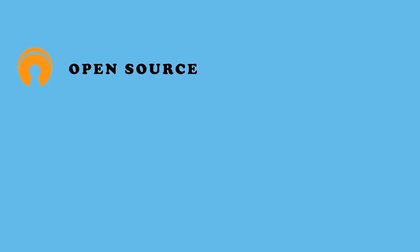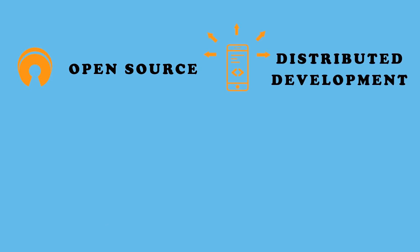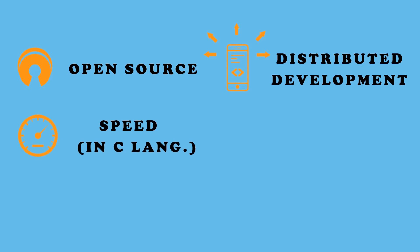What are the features of Git? First, it is open source and free to use. Git helps in distributed development, so multiple collaborators can work on the same project in parallel. Speed is also a factor, because our operations like commit and update happen in the local repository. Git is also implemented in C language, so its speed is really fast.